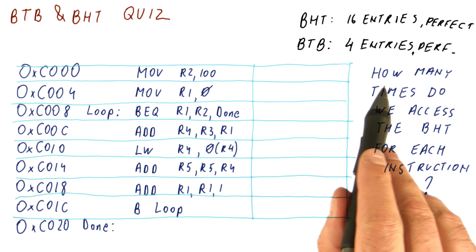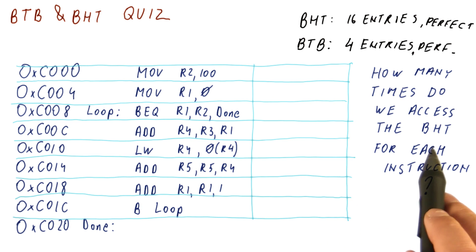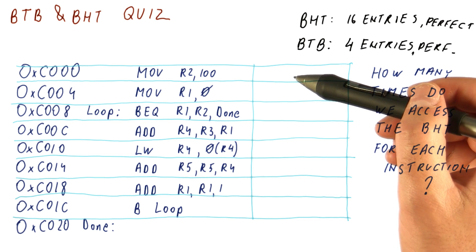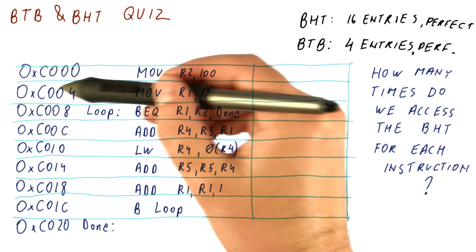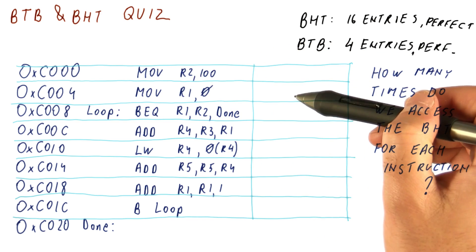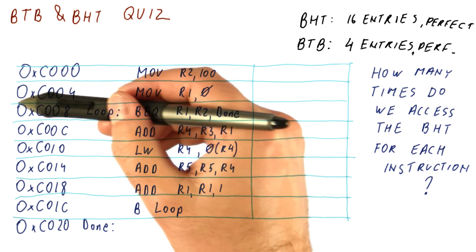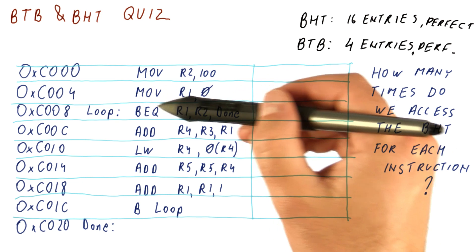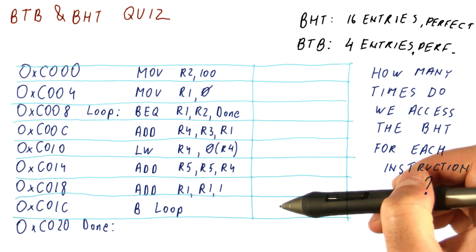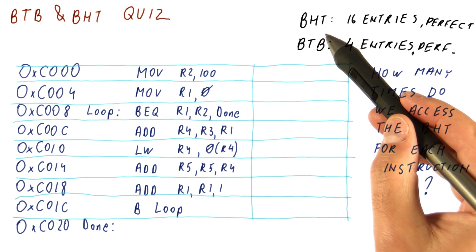So the question for you is how many times do we access the BHT for each instruction. Right here, how many times we access the BHT with this address, because we are fetching this instruction. Here, how many times we access the BHT with this address, because we are fetching this instruction, and so on. There are eight instructions here. For each one of them, we need to say how many times we access the BHT.